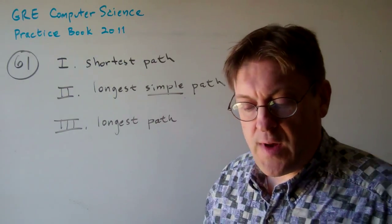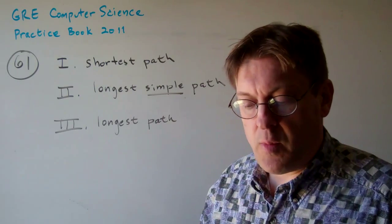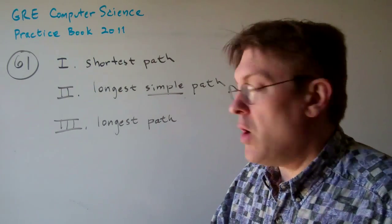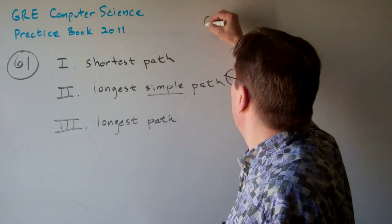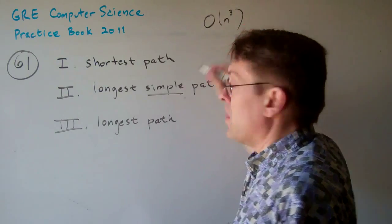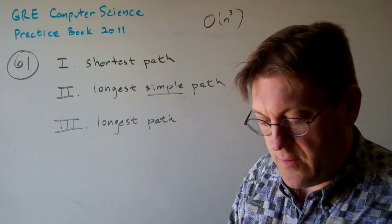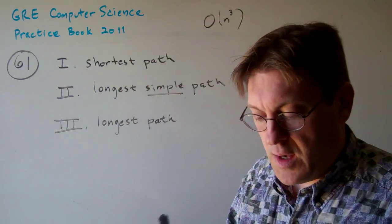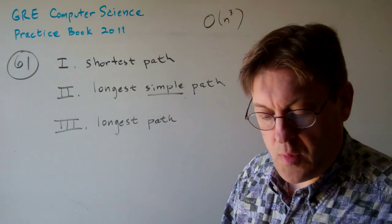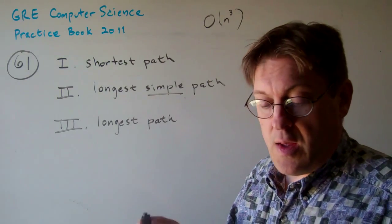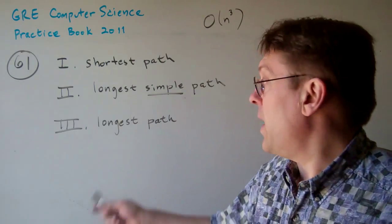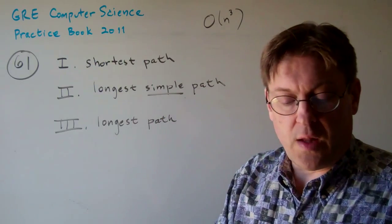Question 61. Which of the following problems are known to be solvable in running time O of n cubed? 1. Find the shortest path from a given start vertex to a given end vertex in a directed graph on n vertices with non-negative integer weights. 2. Find the longest simple path. 3. Find the longest path.